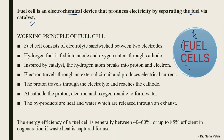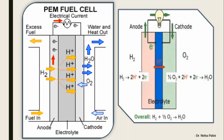Let us look at the basic components of a fuel cell. There will be two electrodes — one is the anode and one is the cathode — and in between you have the electrolyte. At the anode you supply your hydrogen gas, which is the fuel. The anode is coated with a catalyst, which dissociates the hydrogen gas into H⁺ ions and electrons. The H⁺ ions transfer from the anode through the electrolyte to the cathode, while the electrons complete the electric circuit flowing from anode to cathode, generating electricity.